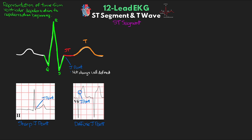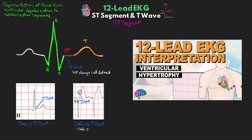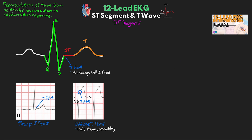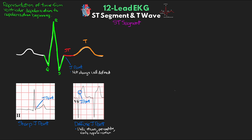We're often going to see diffuse J points with things like left ventricular hypertrophy with strain pattern, pericarditis, as well as early repolarization. But we can also see diffuse J points in MIs, especially when tombstoning is present. Once we have our ST segment identified, what we really want to do is compare its height to that of the isoelectric baseline. Depending on where it is in relation to the baseline, this is going to determine if we have ST elevation or ST depression.